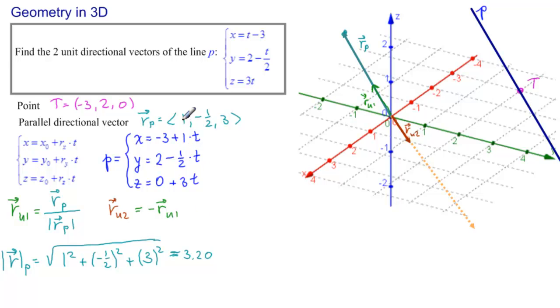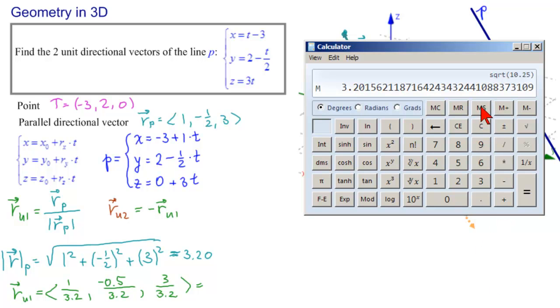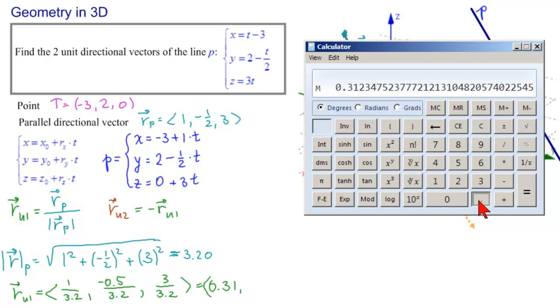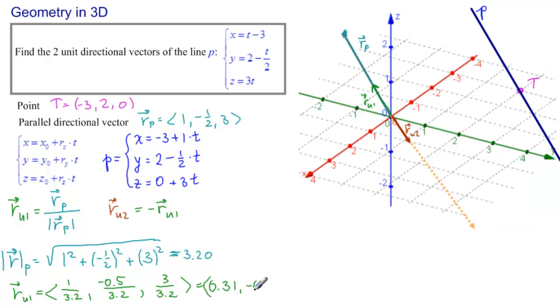And so, now we need to divide each component of that. So, R U 1 equals 1 divided by 3.2 minus 0.5 divided by 3.2. And 3 divided by 3.2. Let's see what that is with our calculator. So, we'll put this in our memory. And so, now we have 1 divided by memory recall equals 0.31. So, 0.31. And then 0.5 plus minus divided by memory recall equals minus 0.16. Minus 0.16.